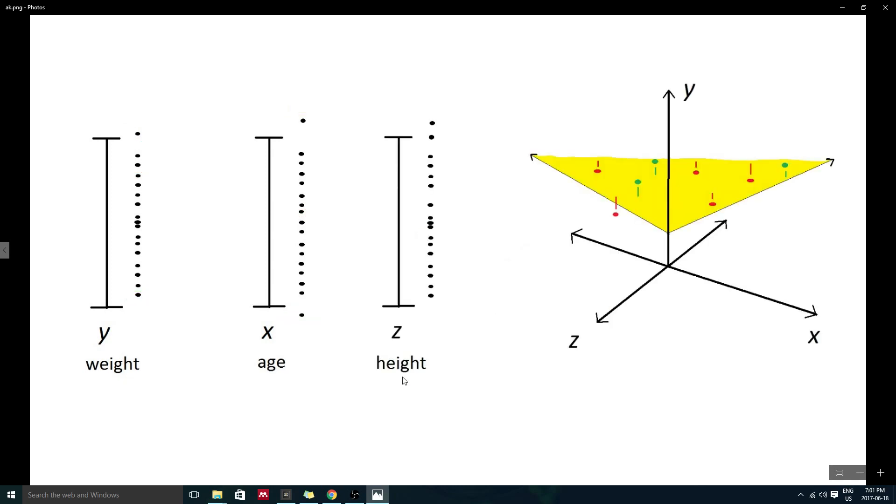Here I have added an additional variable z, which represents height, and accordingly, I have drawn a three-dimensional regression plot. Note that, for the sake of simplicity, some elements of this plot are missing.